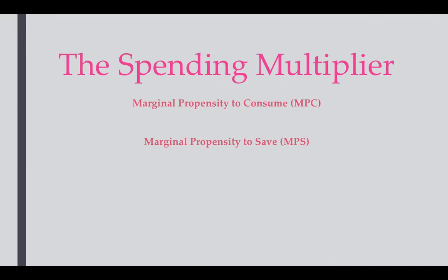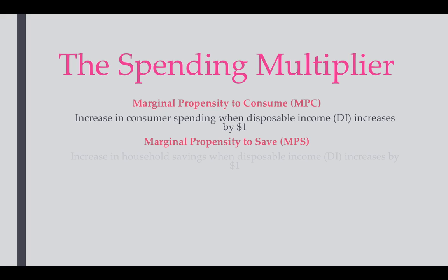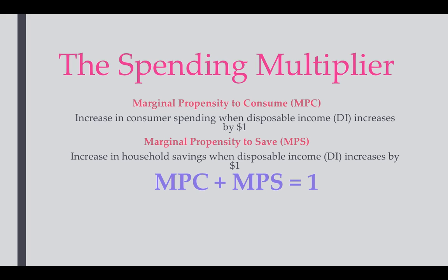There are two important ideas when it comes to the spending multiplier. The first one is the marginal propensity to consume (MPC). Any time disposable income increases by a dollar, it's the amount of that dollar that we will spend. The opposite is the marginal propensity to save (MPS) — the amount that we save when we get an extra dollar. These two numbers will always equal one, because when you get a dollar you can only spend it or save it. So MPC plus MPS always equals one.